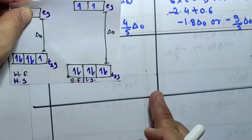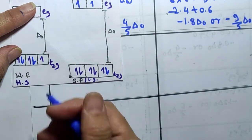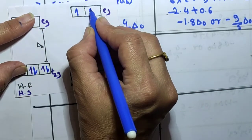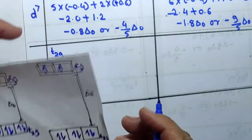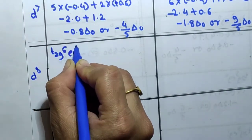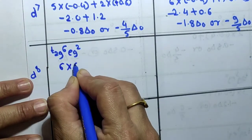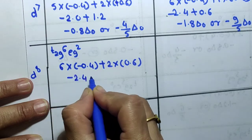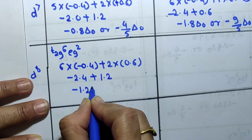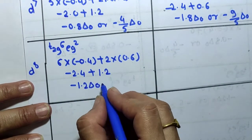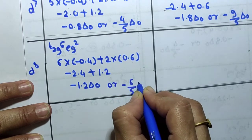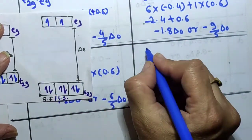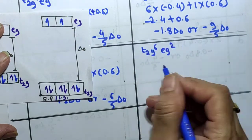For the d8 configuration, in both high spin and low spin the configuration is t2g = 6, eg = 2. CFSE = 6 × (−0.4) + 2 × (0.6) = −2.4 + 1.2 = −1.2 ΔO, or −6/5 ΔO. For d8, d9, and d10 configurations, high spin and low spin give the same CFSE value.